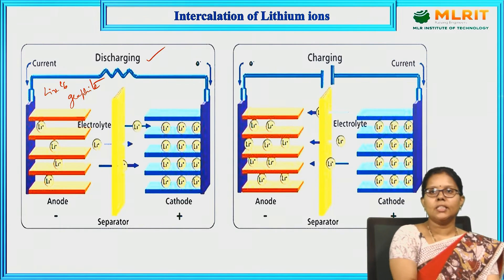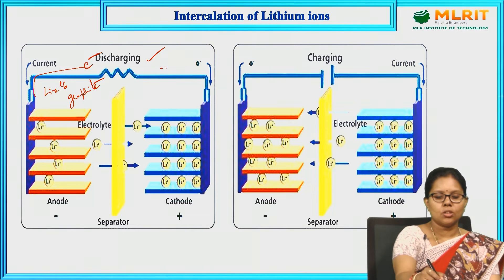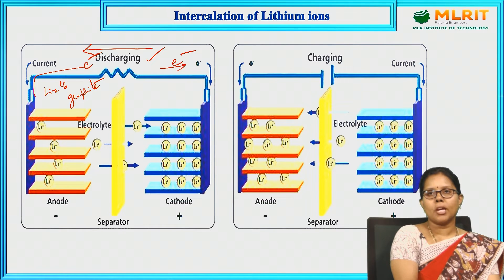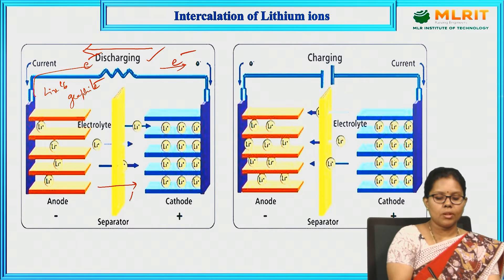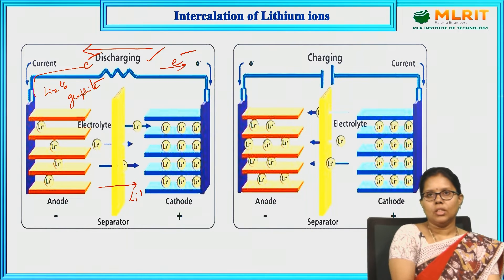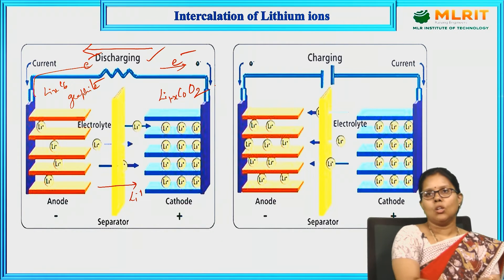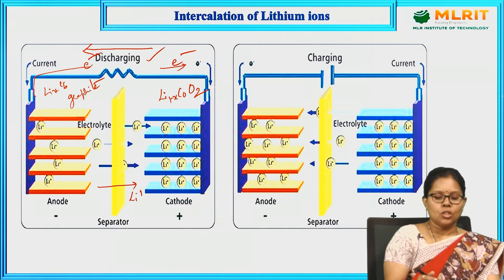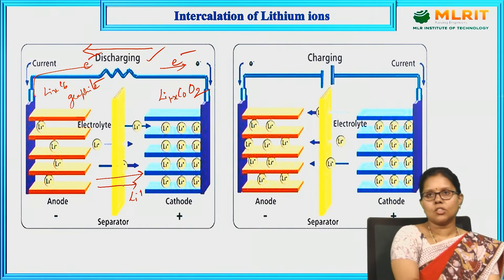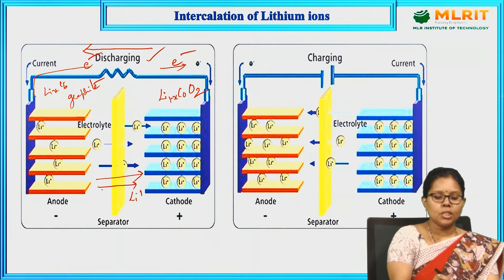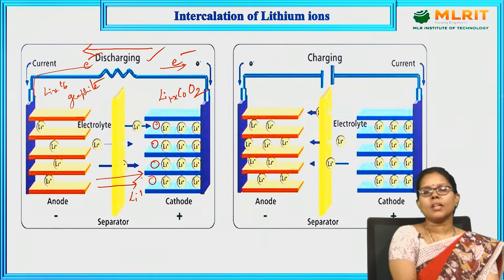During discharging, electrons move from anode to cathode while the current travels in the reverse direction. Lithium ions move from anode to cathode through the electrolyte and settle in the Li(1-x)CoO2 — lithium cobalt oxide — complex structure in its layers. This movement of lithium ions from anode to cathode, incorporating into the lattice sites, is called intercalation.